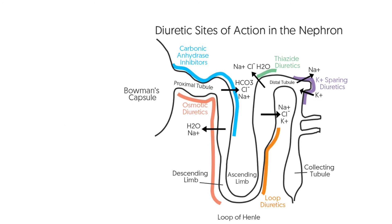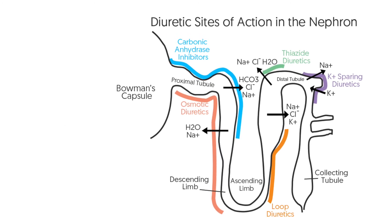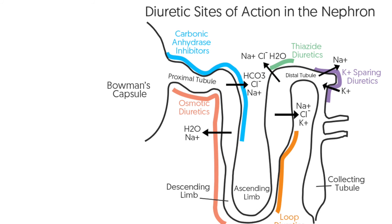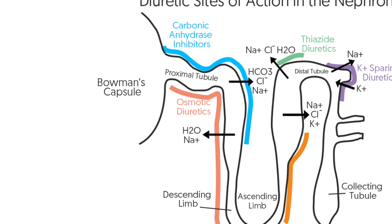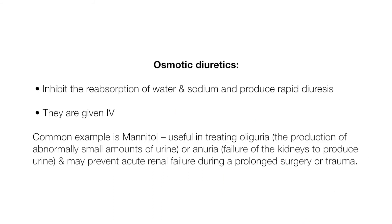Osmotic diuretics inhibit the reabsorption of water and sodium and produce rapid diuresis. They are given IV. A common example is mannitol, which is useful in treating oliguria or anuria and may prevent acute renal failure during prolonged surgery or trauma.